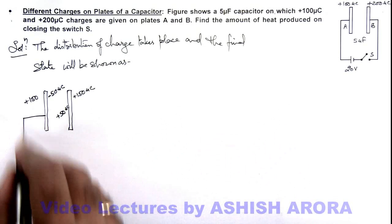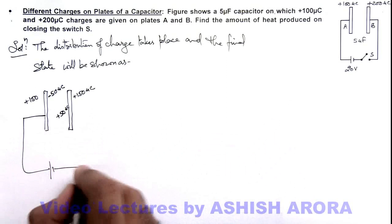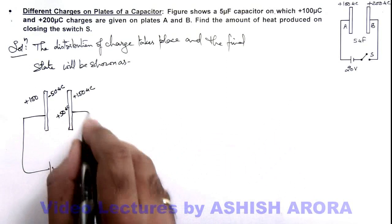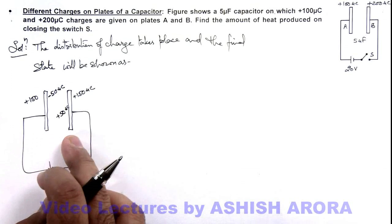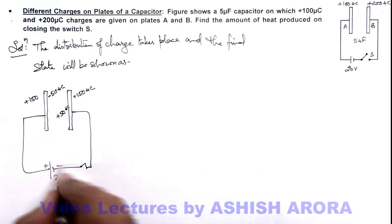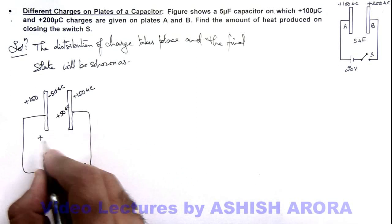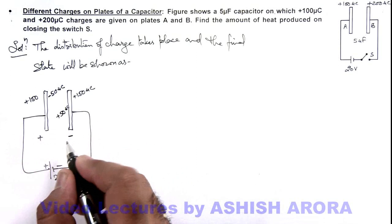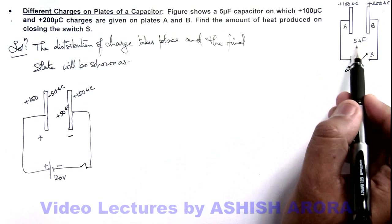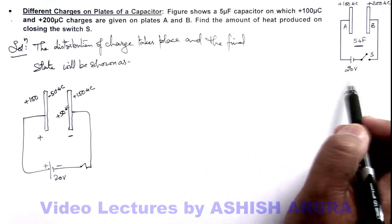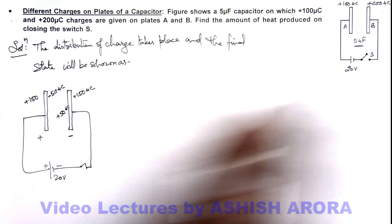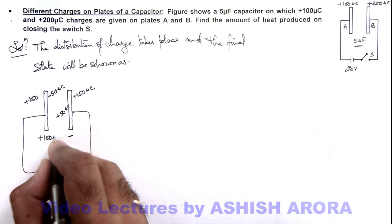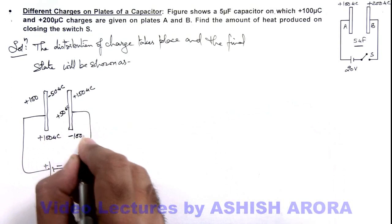And here if we close down this 20 volt battery, here you can see on applying a 20 volt potential difference, the final charge on the left plate would be plus CV and on this plate it is minus CV. So as its capacitance is 5 microfarad, final potential difference is 20 volts, so on the left plate final charge will be 20 multiplied by 5, this is plus 100 microcoulombs, and this is minus 100 microcoulombs.